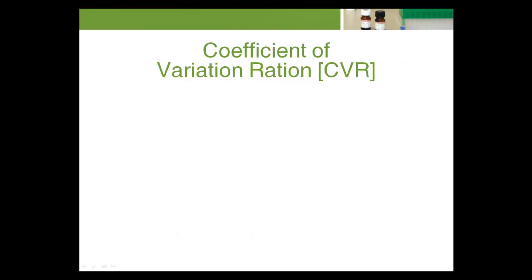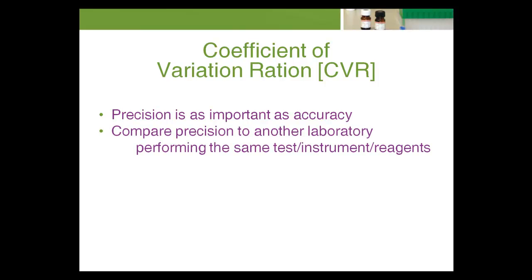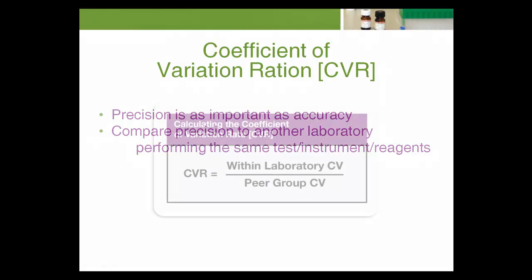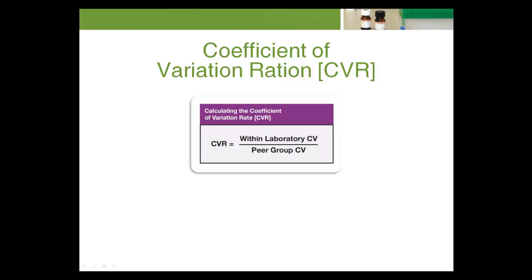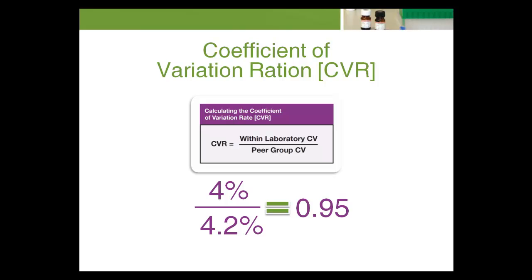Although accuracy of test results is paramount in the clinical laboratory, precision is just as important. One way a laboratory can determine whether the precision of a specific test is acceptable is to compare its precision to that of another laboratory performing the same test on the same instrument using the same reagents. An easy way to make this comparison is to divide the laboratory CV by the laboratory peer group CV obtained from an interlaboratory comparison report. For example, if the CV for potassium on a particular instrument is 4%, and the potassium CV for all other laboratories using the same instrument is 4.2%, then the coefficient of variation ratio (CVR) is 4 over 4.2, or 0.95.